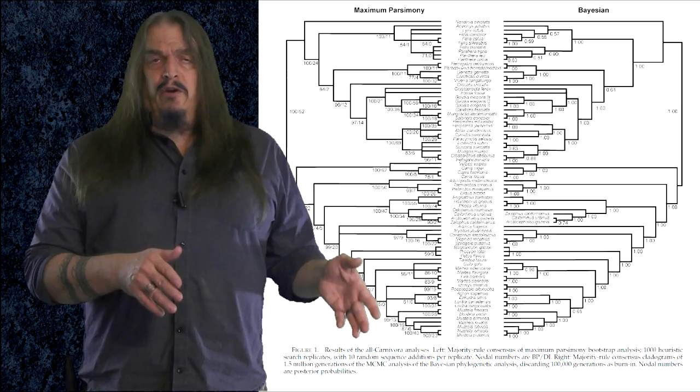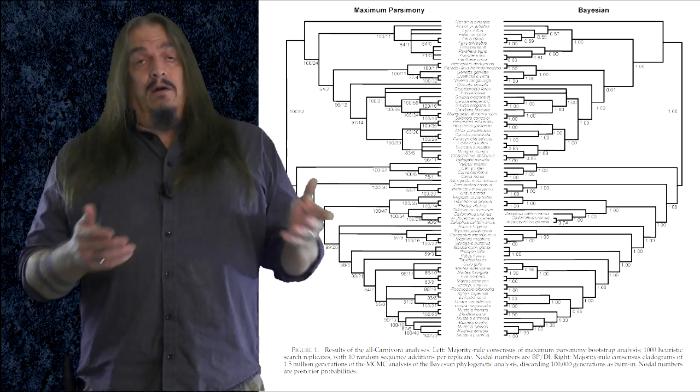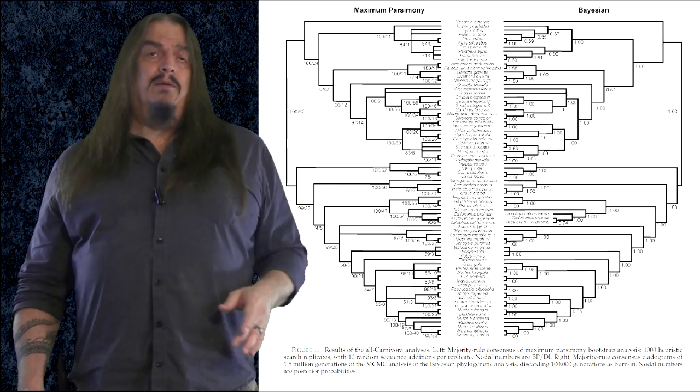And all the true cats, near cats, meer cats, civet cats, bear cats, and everything else on the cat side of the carnivore family tree are all genetically connected to bears, weasels, and seals, and everything else on the dog side of that same taxonomic tree.